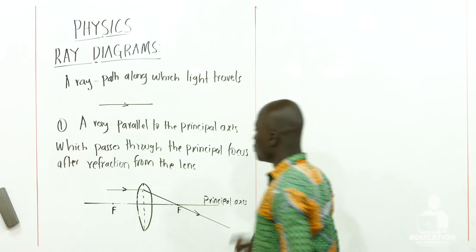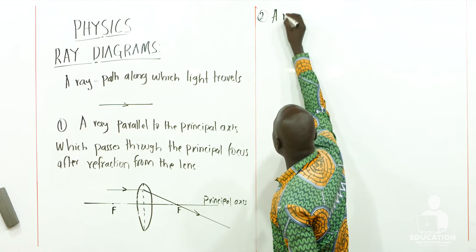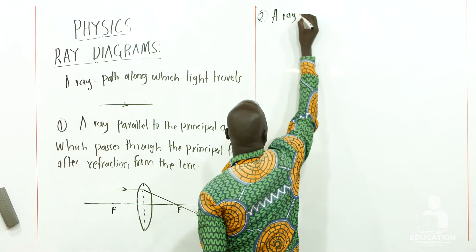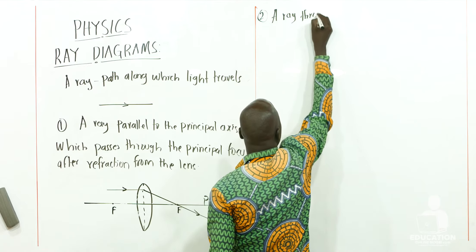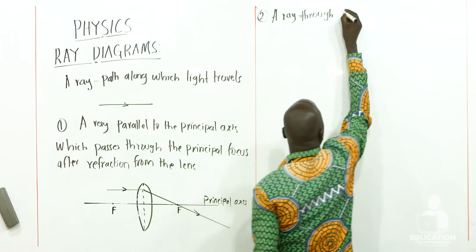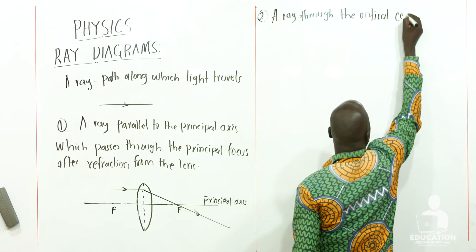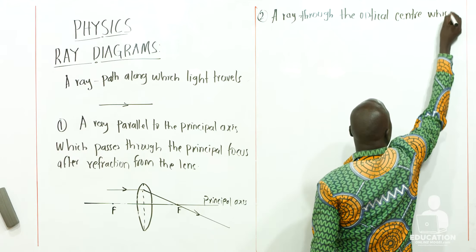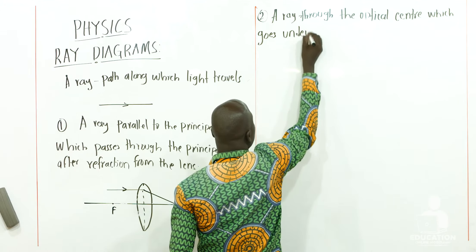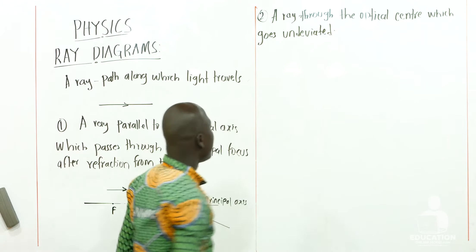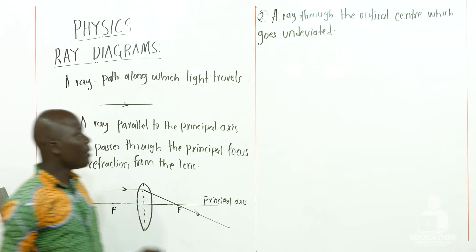The second ray that we can use is a ray through the optical center, which goes undeviated. When we talk about a ray which goes undeviated, it means it is going to pass through the optical center and it will not be refracted.